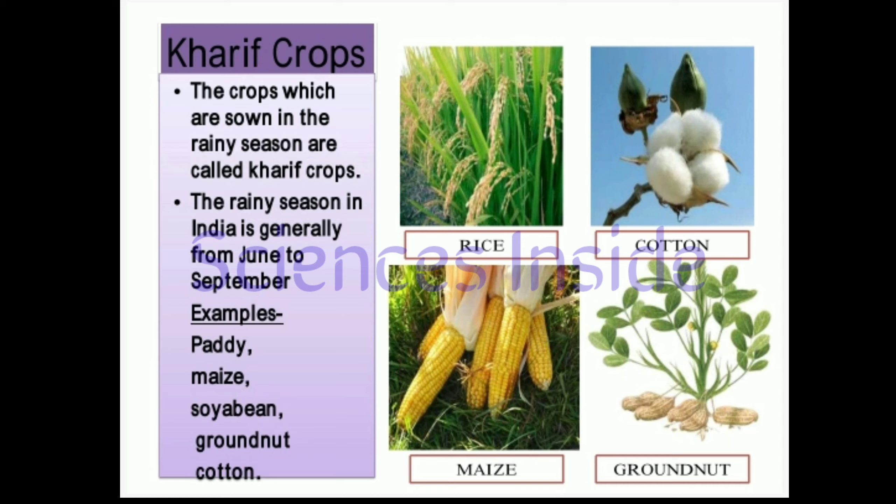The first type is kharif crops. Crops which are sown in the rainy season are called kharif crops. The rainy season in India is generally from June to September. These crops are grown in June and July and are harvested in September and October. They require more water and hence are grown during the monsoon season. Examples include paddy, maize, soybean, groundnut, and cotton.